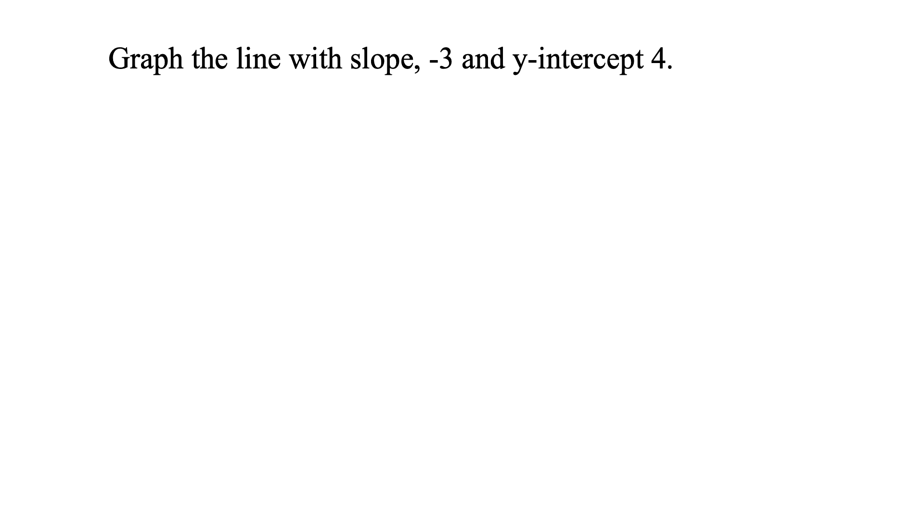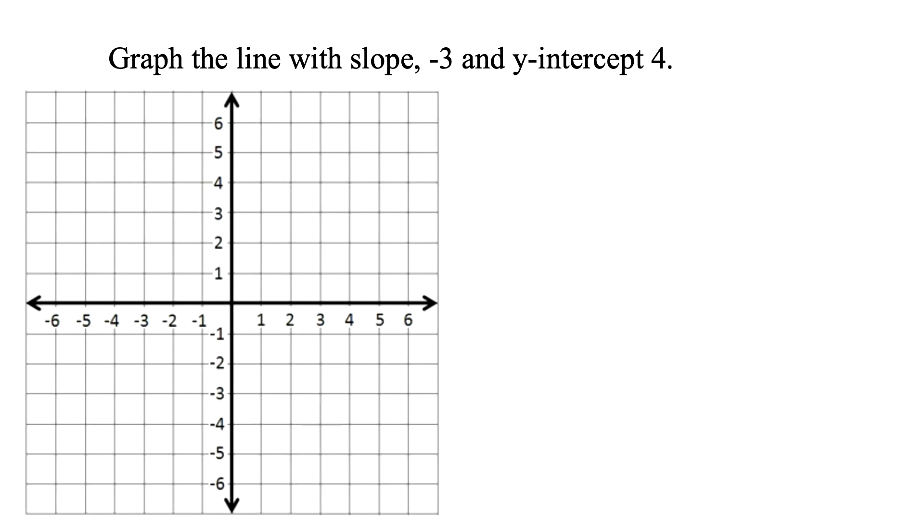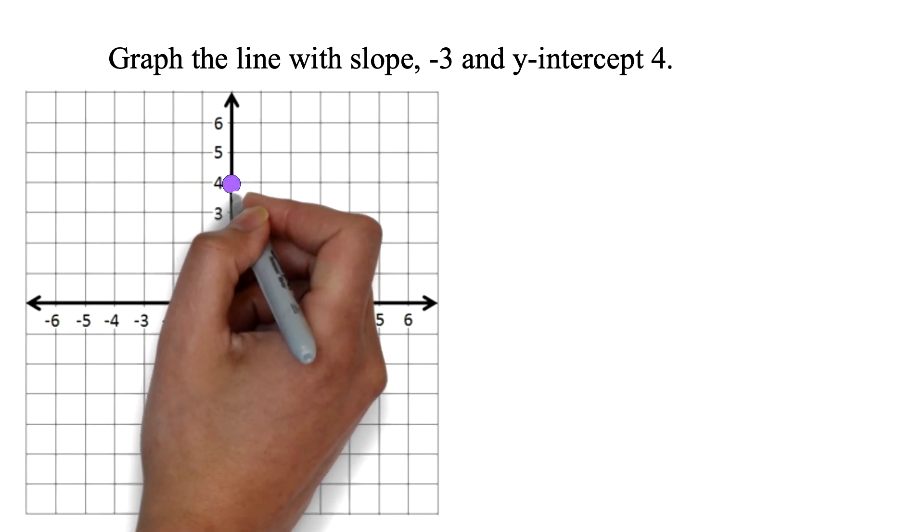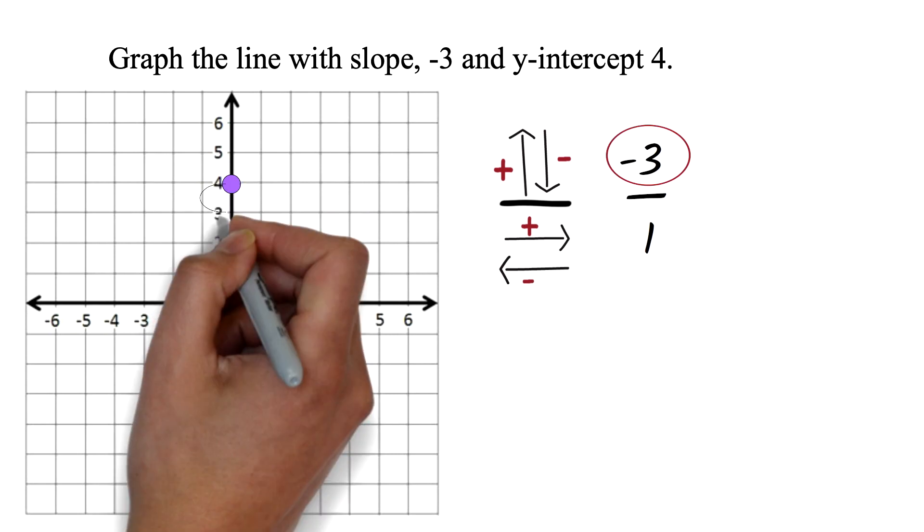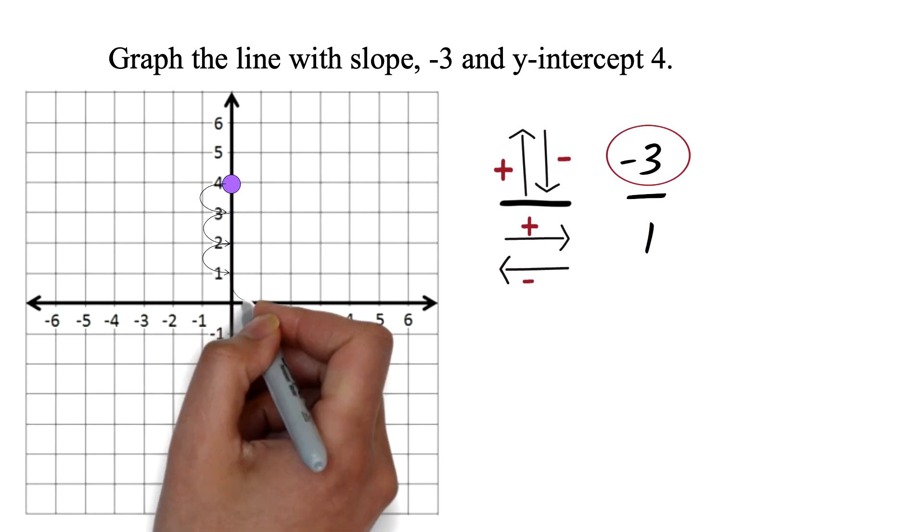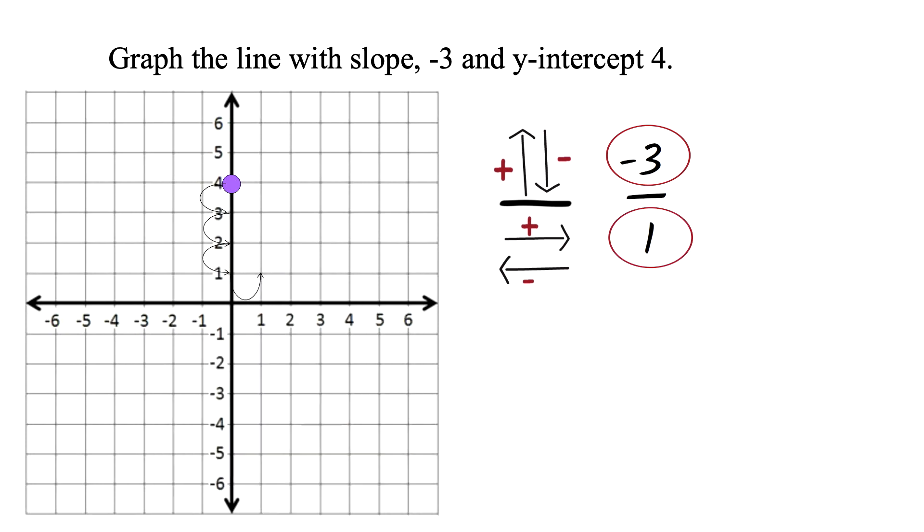Graph the line with slope negative 3 and Y-intercept 4. Let's bring our graph. We know the Y-intercept is a point on the Y-axis. This point is 4. So we plot that first. We need one more point to graph a line. The slope is negative 3. We know that this is the same as negative 3 over 1. We also know that the numerator shows us how many points we should go up or down. And the denominator shows us how many points we should go left or right. Since this is negative, we are moving three points down from the Y-intercept. Then we will move one to the right because it is positive. This will give us our second point. We can now draw a line through our two points and we are done.